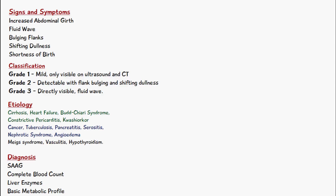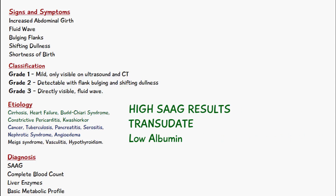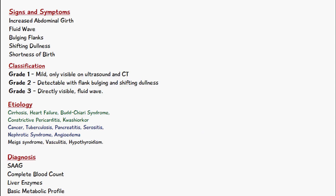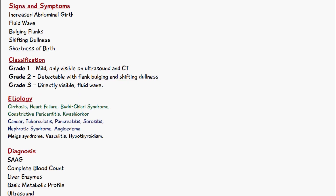The causes of ascites are numerous. High SAAG causes — where the ascitic fluid is transudate with low albumin — include cirrhosis, heart failure, Budd-Chiari syndrome, constrictive pericarditis, and kwashiorkor. Low SAAG causes — where the fluid contains a lot of protein — include cancer, tuberculosis, pancreatitis, serositis, nephrotic syndrome, and angioedema. There are also rare causes such as Meigs syndrome, vasculitis, and hypothyroidism.